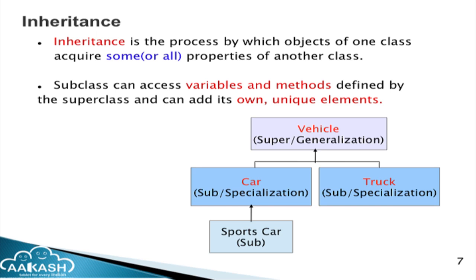What is inheritance? Inheritance is the process by which the object of one class acquires some or all the properties of another class. For example, Vehicle is a general superclass with common features. We can draw two subclasses: Car and Truck. A car may have 4 wheels, a truck may have more than 4 wheels. We can further create a SportsCar subclass from Car, where the sports car may have a stronger engine. It is like a parent-child relationship.